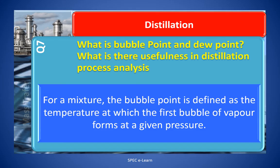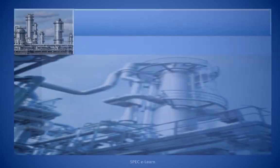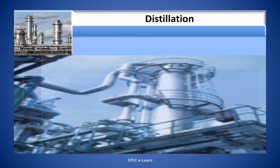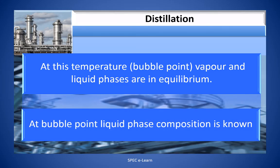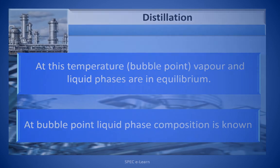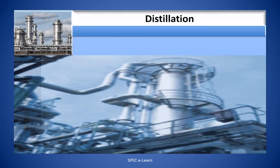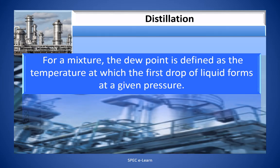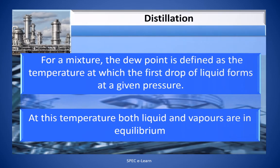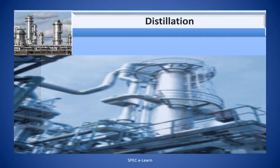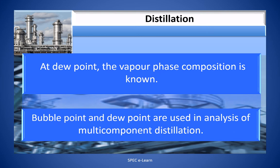For a given mixture, the bubble point is defined as the temperature at which the first bubble of vapor forms at a given pressure. At this temperature, vapor and liquid phases are in equilibrium, and the liquid phase composition is known. For a mixture, the dew point is defined as the temperature at which the first drop of liquid forms at a given pressure. At this temperature, both liquid and vapor are in equilibrium, and the vapor phase composition is known.